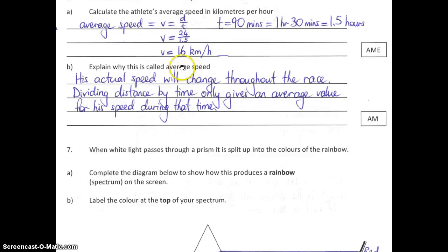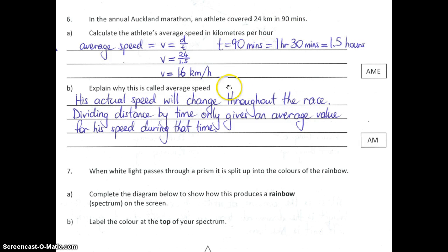The next part asked: explain why this is called average speed. When a person is running a race, they're not going to run at exactly 16 kilometres per hour for the entire 90 minutes. His speed will go up and down — going uphill slows him down, going downhill or with wind speeds him up. When we divide the total distance by the total time, it just gives us an average value for his speed, not how his speed actually changed throughout the race.